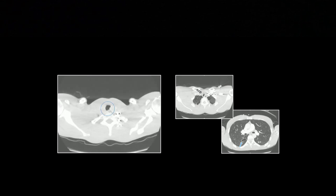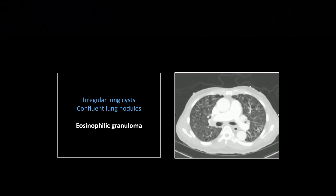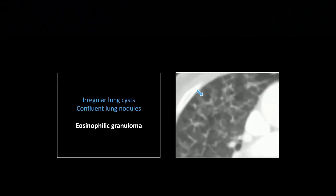So that is laryngeal papillomatosis. Another cystic lung disease, this one associated with small nodules as well. That's the way I always think of this: small irregular cysts with no wall and tiny nodules simultaneously. That is eosinophilic granuloma.